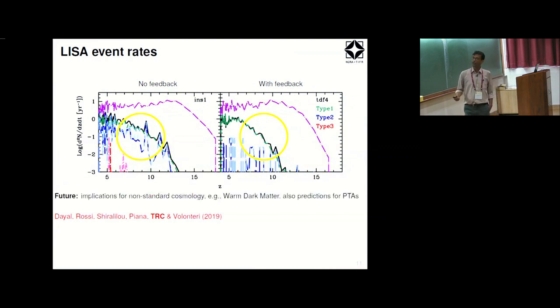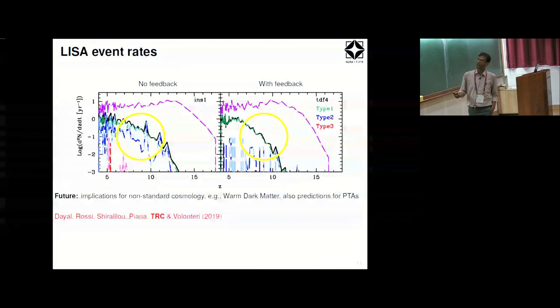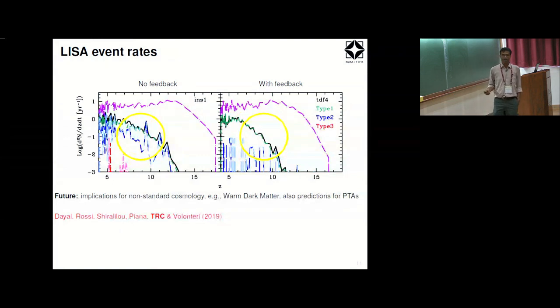This also has other applications. For example this also may have implications for non-standard cosmology in the sense one can start worrying about warm dark matter particles and constraints on them using similar observations. And also although I have presented these results keeping LISA in mind these things will also be observable through the pulsar timing arrays. We still haven't completed the calculations for these things but hopefully the results will be as interesting as this.